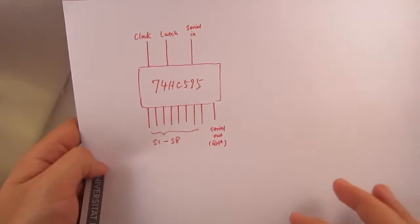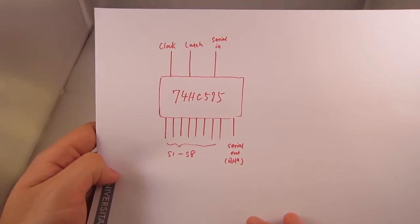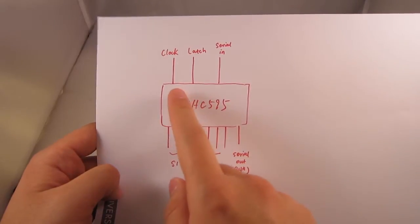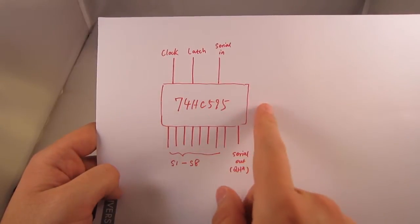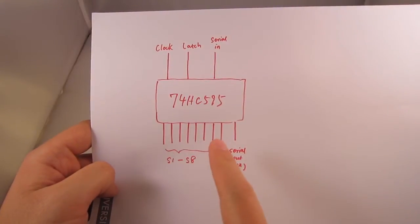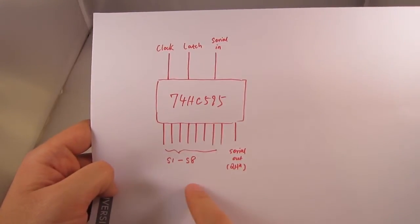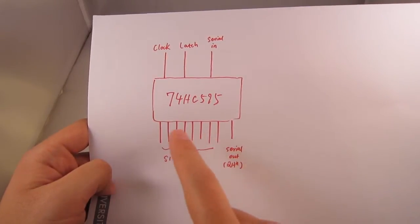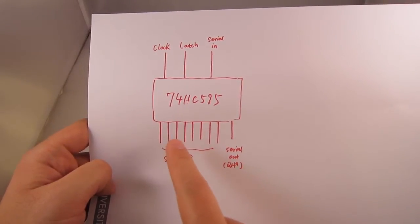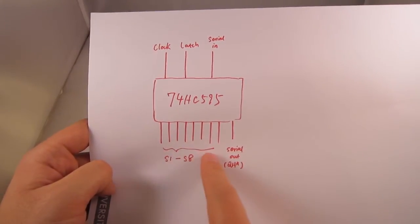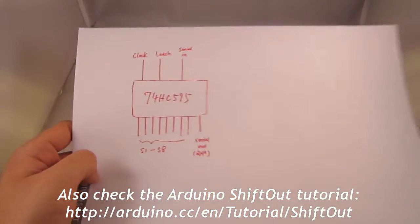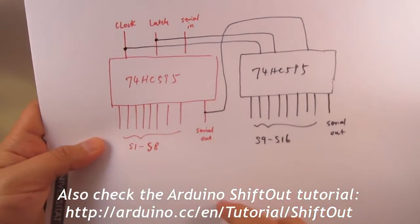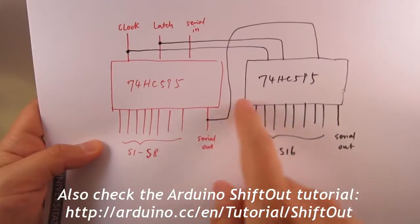The way this works is that the microcontroller typically uses three digital pins to send a serial byte to the shift register, and the serial byte contains the control data for eight individual stations.